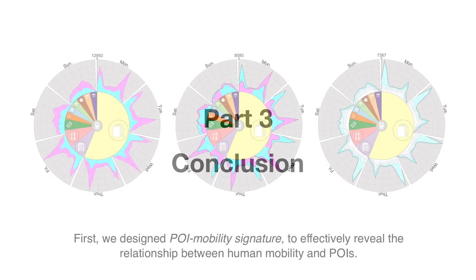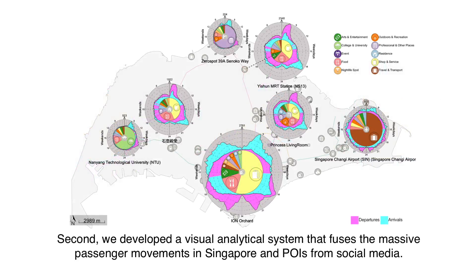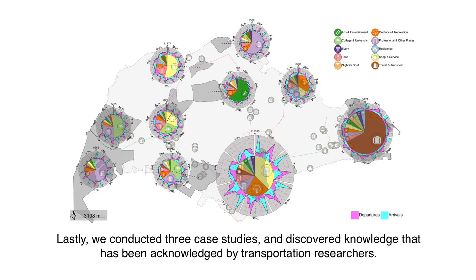The major contributions of this work: First, we designed POI Mobility Signature to effectively reveal the relationship between human mobility and POIs. Second, we developed a visual analytics system that fuses the massive passenger movements in Singapore and POIs from social media. Lastly, we conducted three case studies and discovered knowledge that has been acknowledged by transportation researchers.